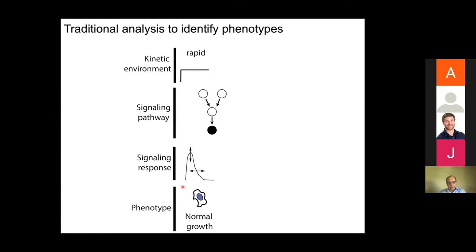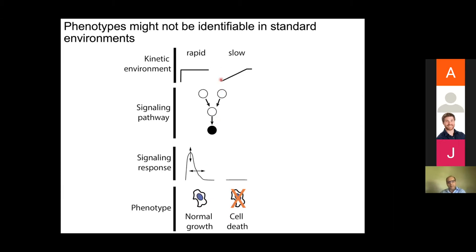This stress response pathway protects the cells and enables them to grow normally. But we can also have a situation where the same stress with the same final concentration and the same total amount of stress is applied to the cells, but under this condition the stress response pathway that should protect the cells does not get activated, which can then lead to cell death.